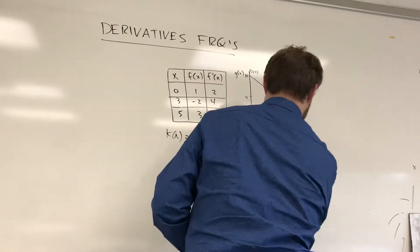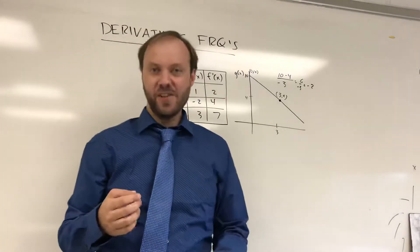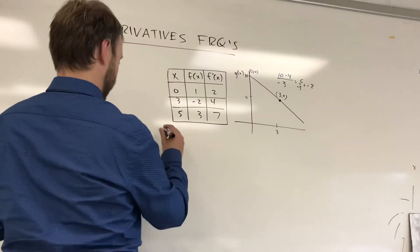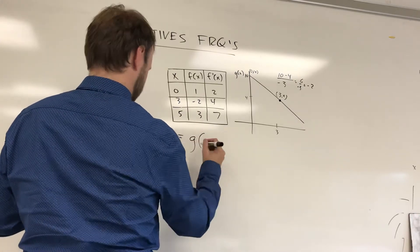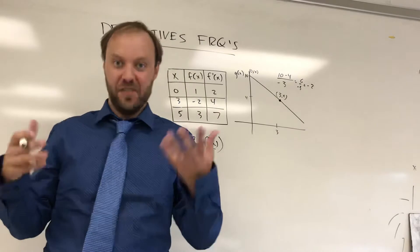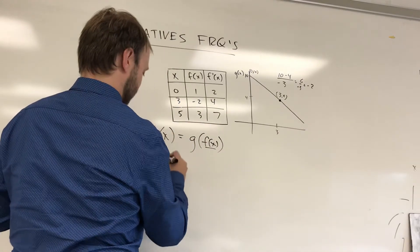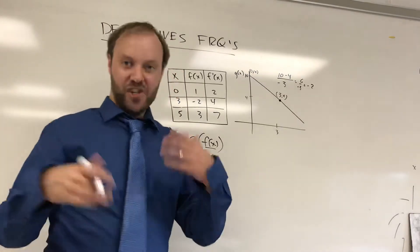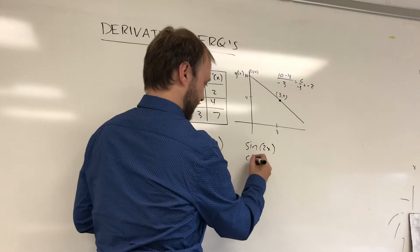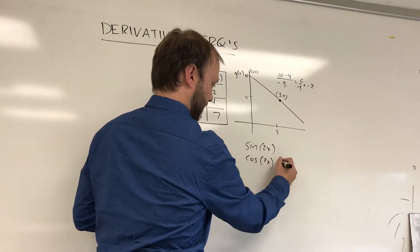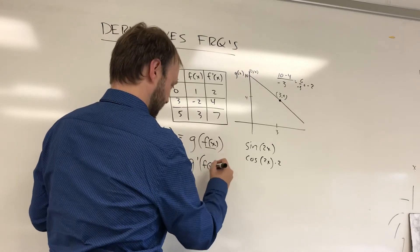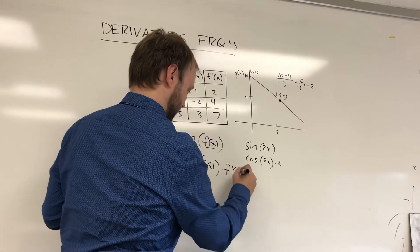A lot of people ask about composite functions, so we need to be careful here. They expect you're comfortable working with composite functions — a big topic in algebra 2 and pre-calc. Composite function notation means you're putting one function into another. When taking the derivative, you'll need the chain rule. Like sine of 2x: take the derivative of the outside, don't change the inside, then multiply by the derivative of the inside. Same here: take the derivative of the outside, g prime, don't change the inside function, and multiply by the derivative of the inside function.